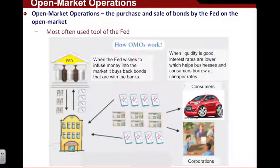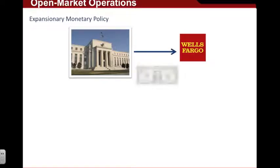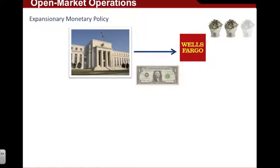Let's look at an example of how the Federal Reserve looks to expand the economy — what's known as expansionary monetary policy. Here we have the Federal Reserve and here we have a bank, Wells Fargo. Let's say the Federal Reserve wishes to have the economy grow. What they're going to do is adopt expansionary monetary policy. The Federal Reserve will call Wells Fargo and say, 'We're going to send you money — a million dollars, two million dollars, whatever it is.'